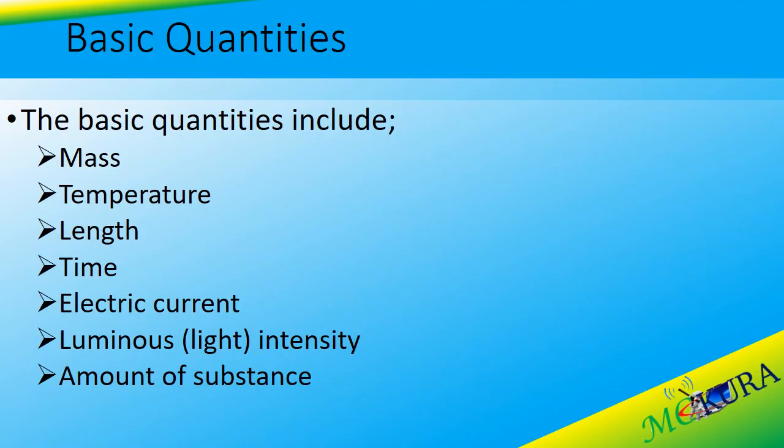Basic quantities. The basic quantities include: 1. Mass, 2. Temperature, 3. Length, 4. Time, 5. Electric current, 6. Luminous intensity or light intensity, and 7. Amount of substance.